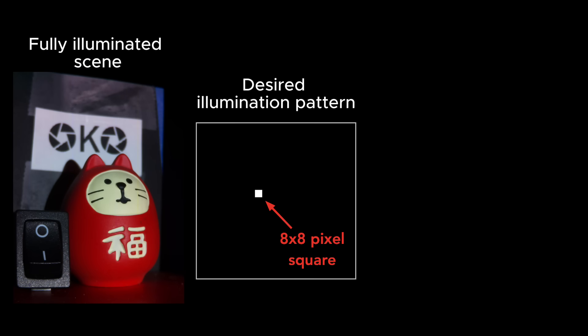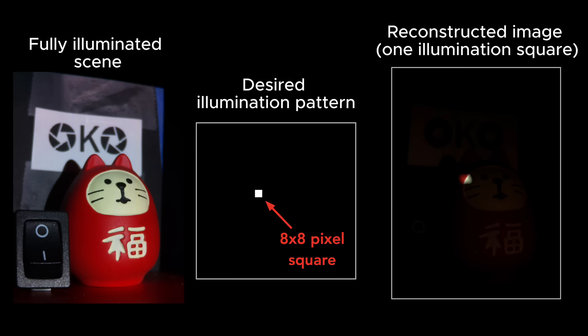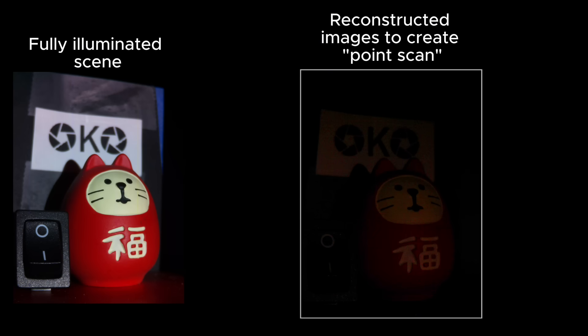Now when I select specific illumination pixels — let's say this patch here — I look up the binary values for those pixels and search the dataset for the camera pixels that match the binary sequence. That's one small square, but I have the information for any illumination pixel. So even though I never collected the thousands of images required for point scanning the scene, I can create them using the data from only 16 images.